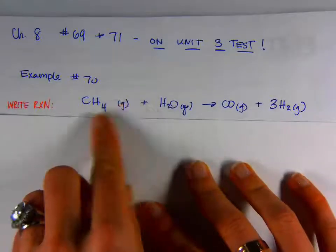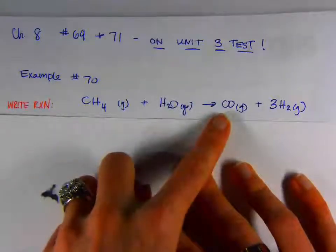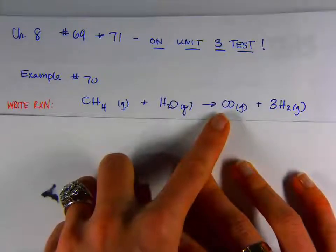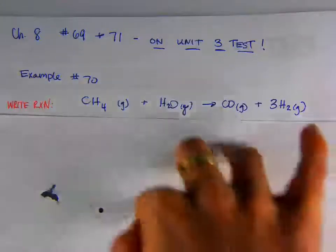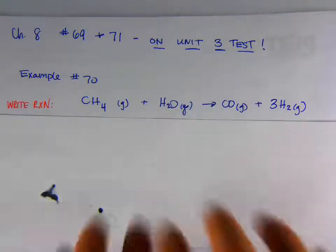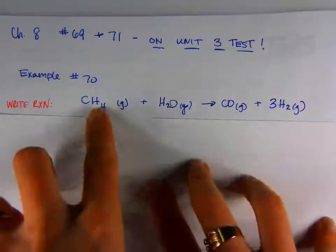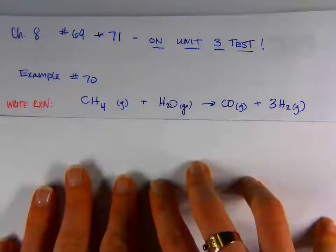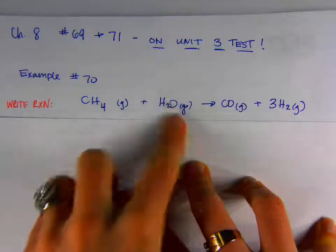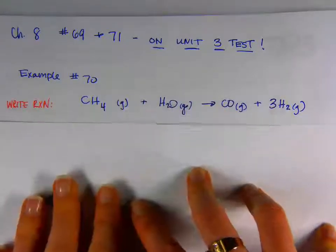Example number 70 says, here's a reaction, what's the delta H of the reaction? Calculate it using bond enthalpies. And you are given a table of bond enthalpies in your book. It is on page 374. I think it's table 8.4. So the first thing that I like to do is write the chemical reaction. The second step is going to be to draw the reaction in Lewis structures.